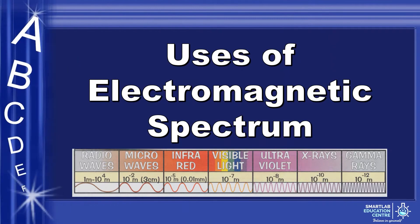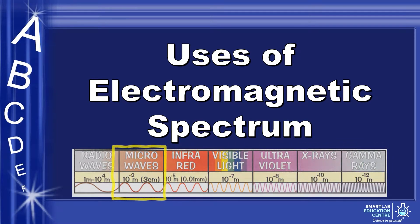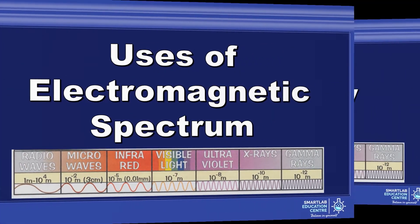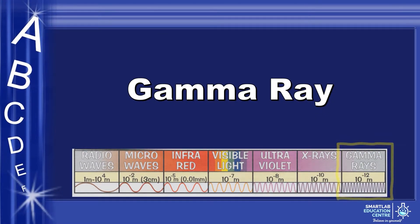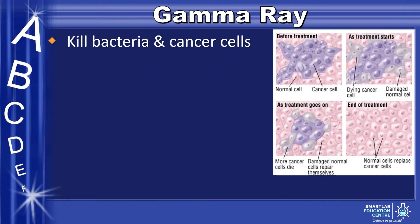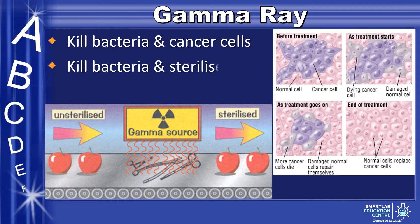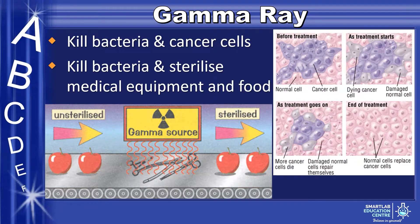Second topic: uses of the electromagnetic spectrum. We will go from the high end of the EM spectrum to the low end. First, gamma ray. Gamma ray is used to kill bacteria and cancer cells. It is also used to sterilize medical equipment and food.